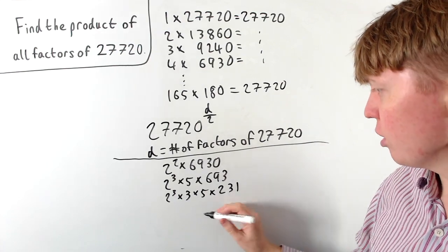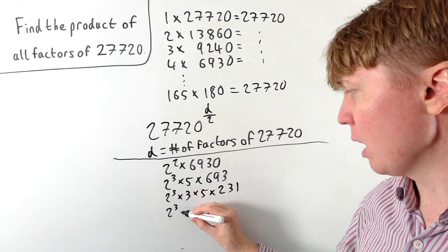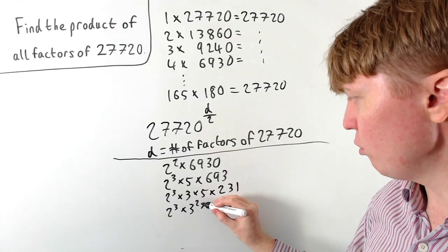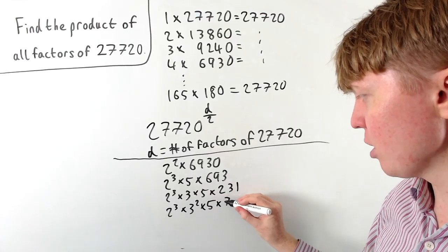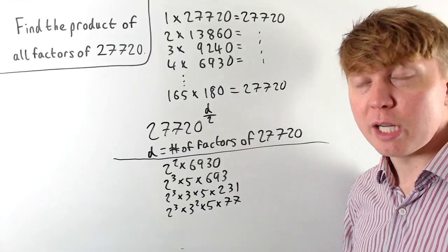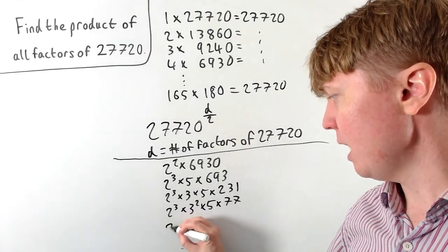And then 231 is also divisible by 3. So we get 2 cubed times 3 squared times 5 times 77. Then we can see the 77 breaks up into 7 times 11.